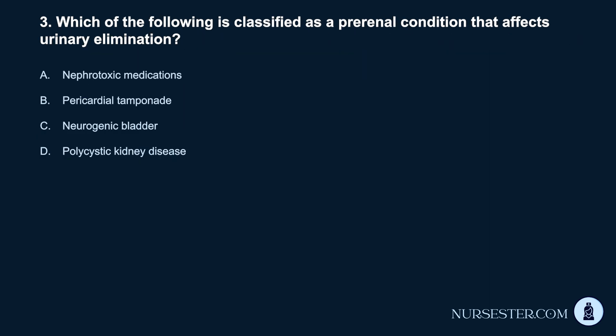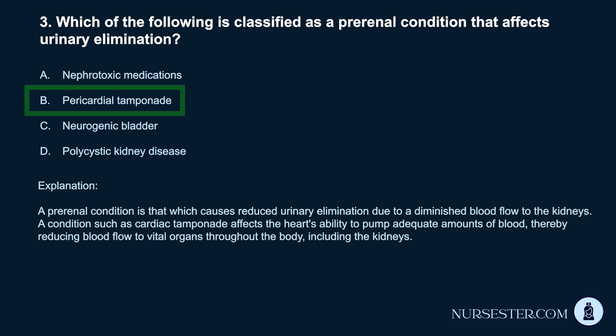Question 3. Which of the following is classified as a pre-renal condition that affects urinary elimination? a. Nephrotoxic medications. b. Pericardial tamponade. c. Neurogenic bladder. d. Polycystic kidney disease. Correct answer: b. Pericardial tamponade. A pre-renal condition is one that causes reduced urinary elimination due to diminished blood flow to the kidneys. A condition such as cardiac tamponade affects the heart's ability to pump adequate amounts of blood, thereby reducing blood flow to vital organs throughout the body, including the kidneys.